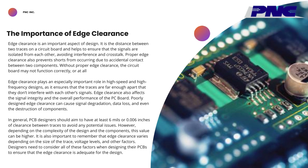It is the distance between two traces on a circuit board and helps to ensure that the signals are isolated from each other, avoiding interference and crosstalk. Proper edge clearance also prevents shorts from occurring due to accidental contact between two components. Without proper edge clearance, the circuit board may not function correctly or at all. Edge clearance plays an especially important role in high-speed and high-frequency designs, as it ensures that the traces are far enough apart that they don't interfere with each other's signals.